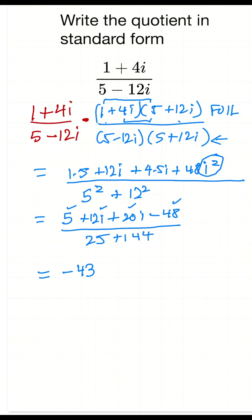Now let's combine the two imaginary portions. So that's going to be plus 12i plus 20, so that's plus 32i. And in the denominator, we've got 25 plus 144, that's 169.